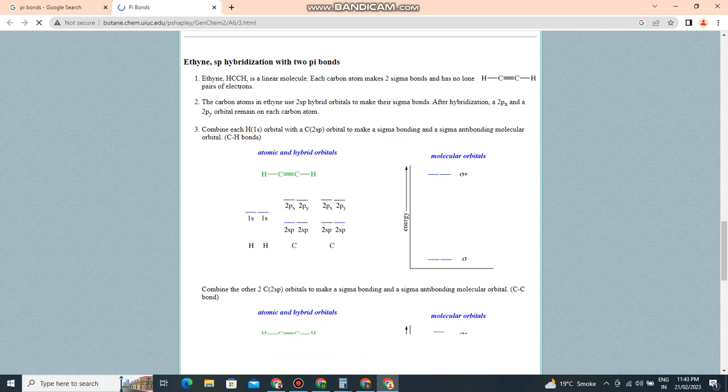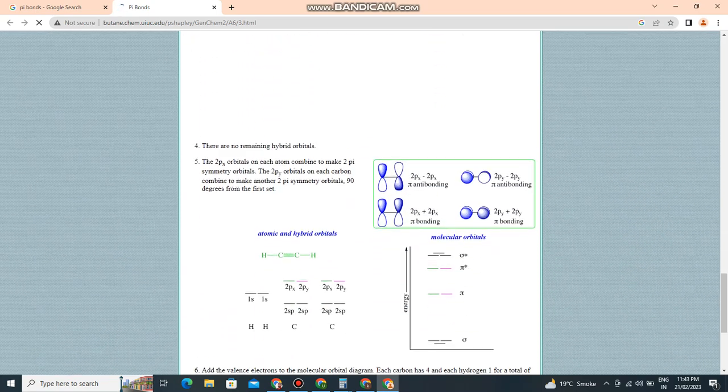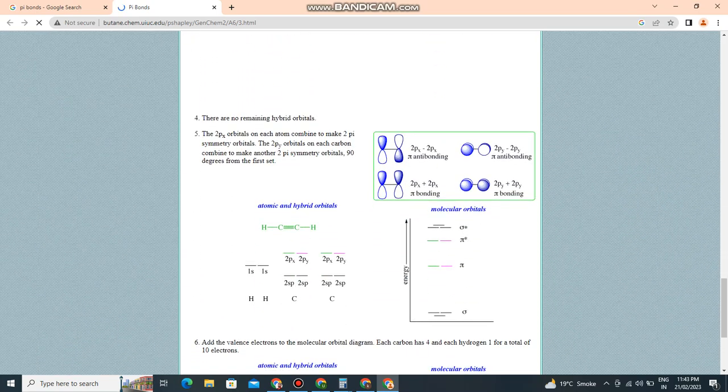Combine each H 1s orbital with a C 2sp orbital to make a sigma bonding and a sigma antibonding molecular orbital for the C-H bonds. There are no remaining hybrid orbitals.